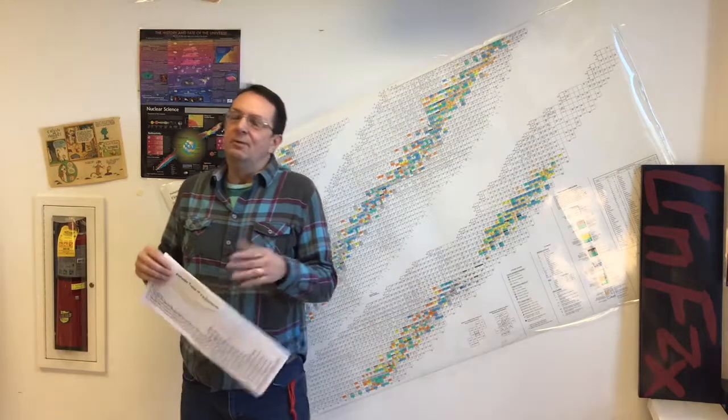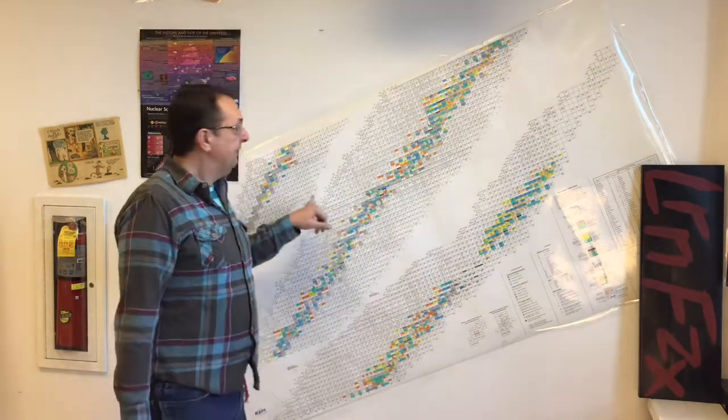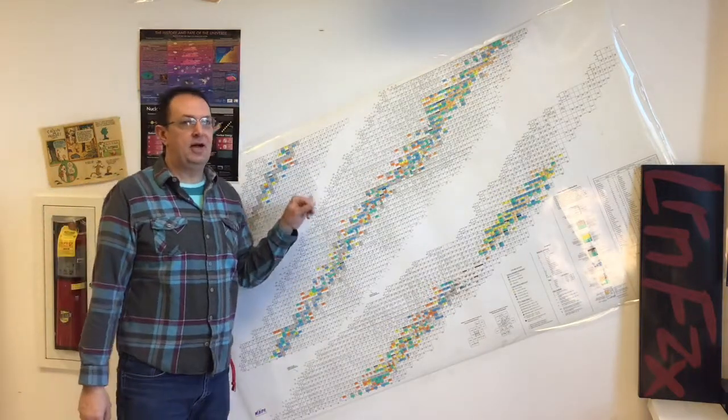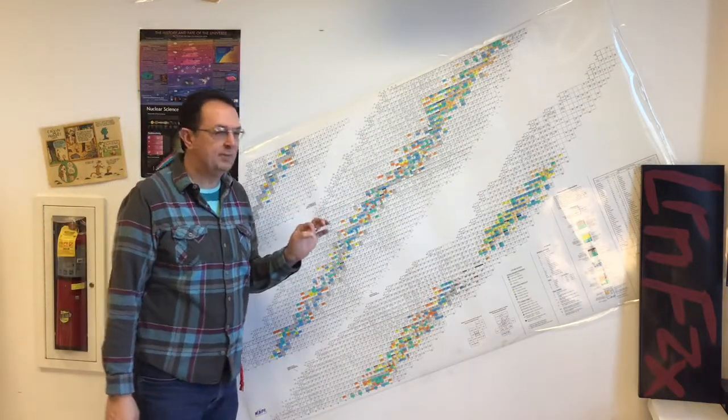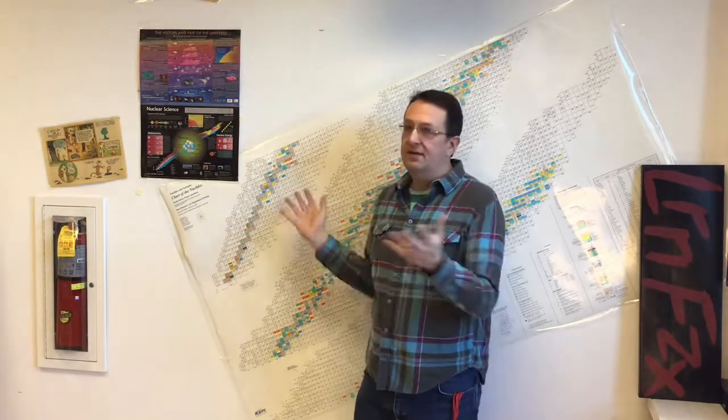Chemistry is all about the electrons. You deal with the protons a little bit just to determine the number of electrons in a neutral atom. But that's not what this thing's about. This is a chart of the nuclides — all of the isotopes. You spend about three minutes in your chemistry class dealing with the concept of isotopes, but this chart contains all of the ones that we've made in the lab and that we can find in our crust.